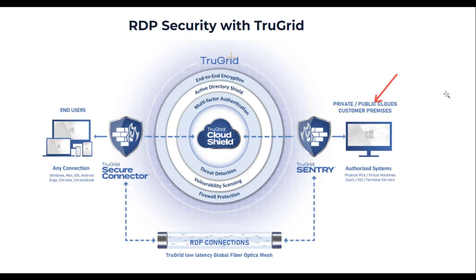TrueGrid secures RDP to Windows computers hosted inside private and public clouds or customer premises. Computers that can be secured by TrueGrid include physical Windows PCs, virtual machines, DAIS, VDI, and terminal or RDS servers.